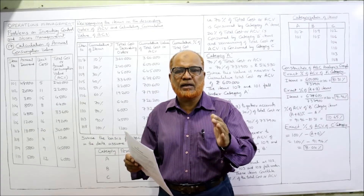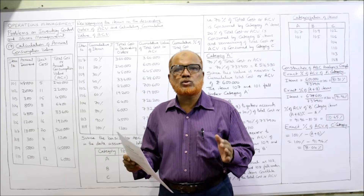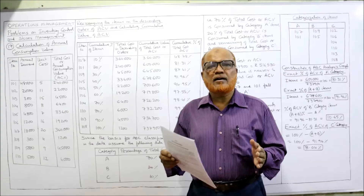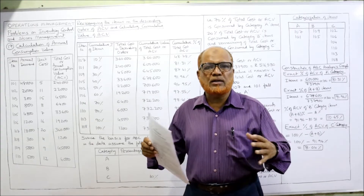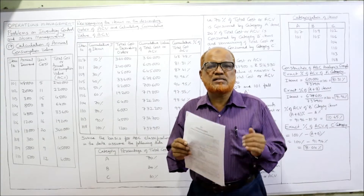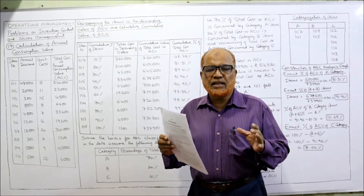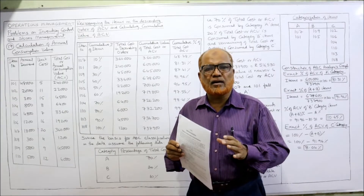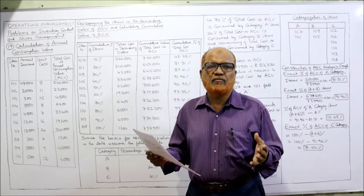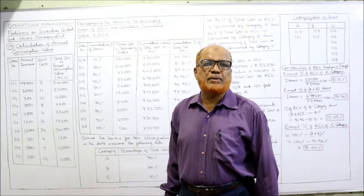We have to classify the items among A, B, and C categories. A category items are those whose quantity is less but value is more. C category is exactly opposite — quantity is more but value is less. In between A and C, we have the middle class, that is B class, which contains items having moderate, meaning medium value and medium quantity.